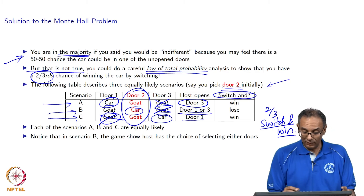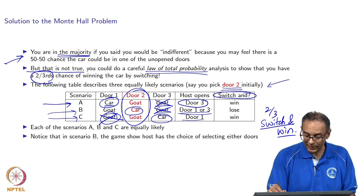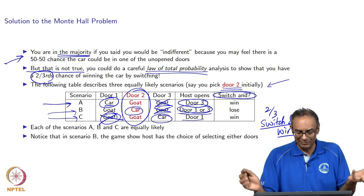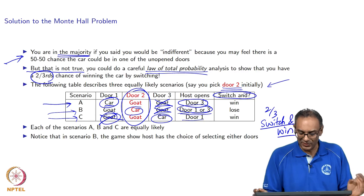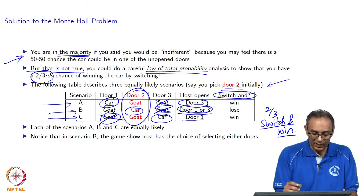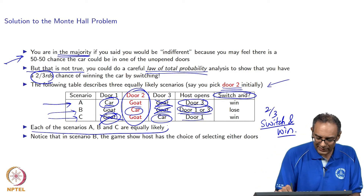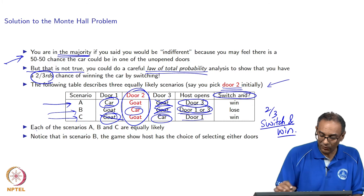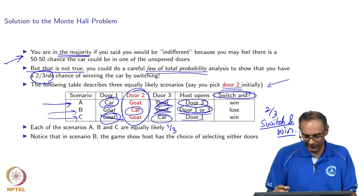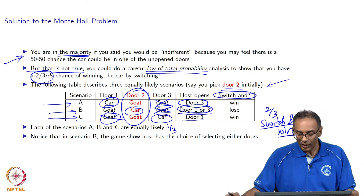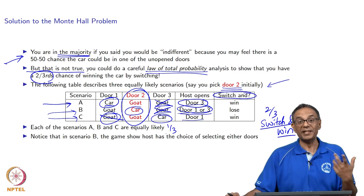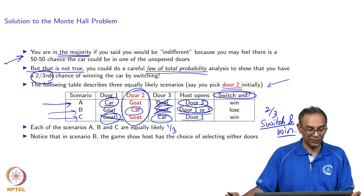Notice that in Scenario B, the host could open either door 1 or door 3, but it does not matter - the game show host arbitrarily picks one. Also notice that the three scenarios are equally likely with probability one-third each. Therefore, the probability of winning by switching is two-thirds.